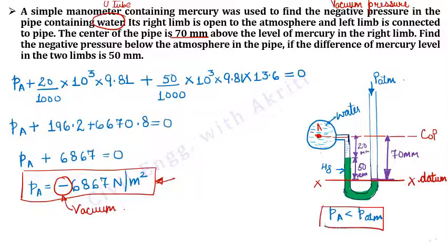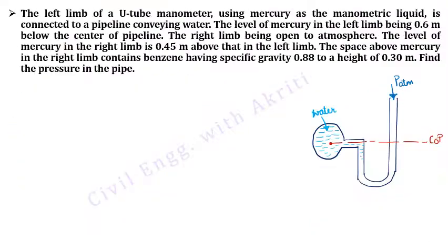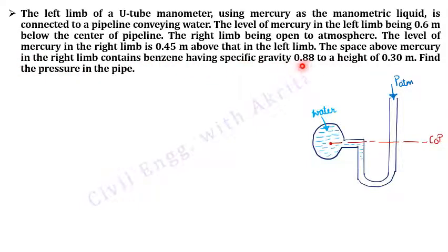The pressure in the pipe is less than atmospheric pressure — that is the pressure existing inside the pipe. Now the next question: the left limb of a U-tube manometer using mercury as its manometric liquid is connected to a pipeline conveying water. The level of mercury in the left limb is 0.6 meters below the center of the pipeline. The right limb is open to atmosphere. The level of mercury in the right limb is 0.45 meters above that in the left limb. The space above mercury in the right limb contains benzene having specific gravity 0.88 to a height of 0.3 meters. Find the pressure in the pipe.